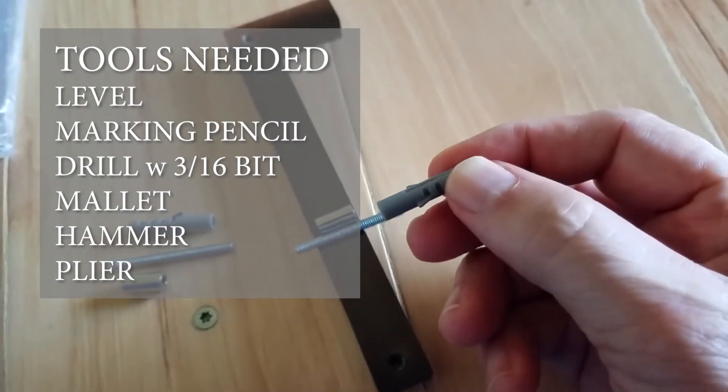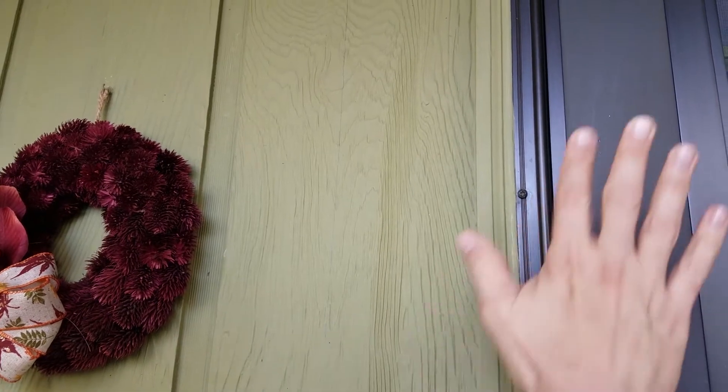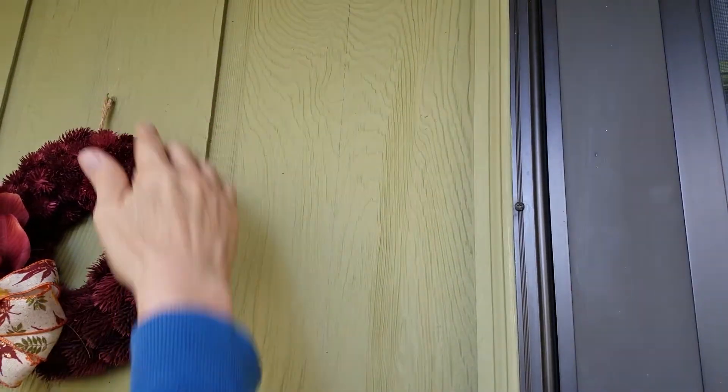Let's head outside and see if we can install it. First thing we need to do is find a spot where we want this. We've decided it's going to be on this panel above our doorbell, so it makes sense.